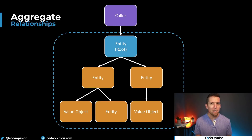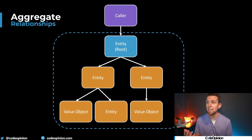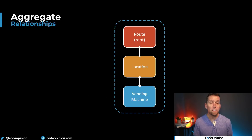I generally feel like most aggregates are designed with thinking about relationships. What I mean by that is I have an aggregate here of various entities and value objects. At the very top I have our aggregate root — this is the entity where callers are all making inbound calls to, not directly to any other entities within our aggregate.